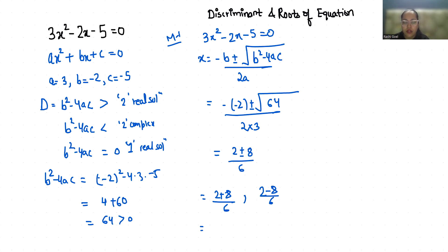2 plus 8 is 10, 10 by 6, which we will simplify to 5 by 3. The second case gives us minus 1. So our solutions are 5 by 3 and minus 1.